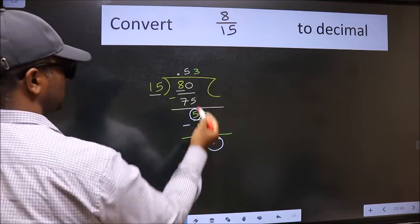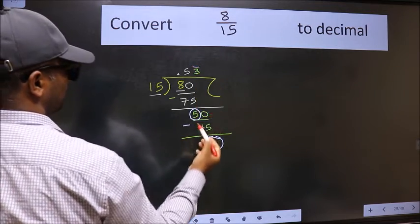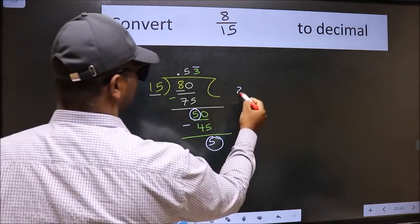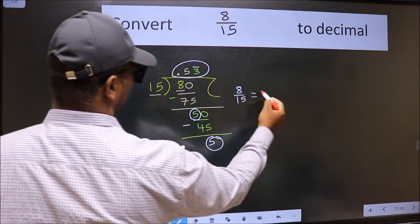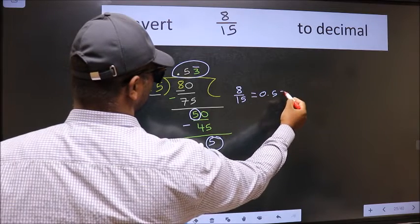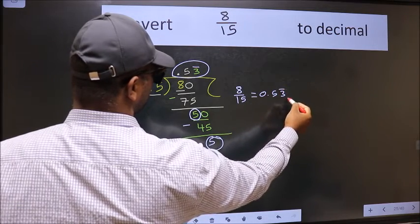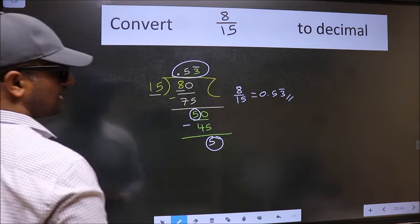That means we get bar on this number. Therefore, decimal of 8 by 15 is this one. 0.53 bar on this number. This is our answer.